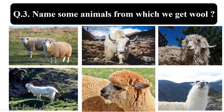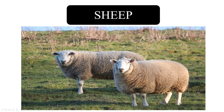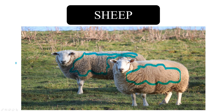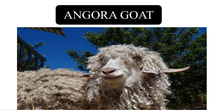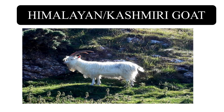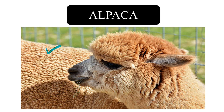Some animals from which we get wool are sheep, yak, angora goat, Himalayan or Kashmiri goat, alpaca, and llama. Sheep wool is the most commonly available wool in the market. Can you see the thick coat of hair on the sheep's body? From this thick coat of hair, we get our wool fiber. The yak also has a very thick coat of hair, as do the angora goat and the Himalayan or Kashmiri goat. Alpaca and llama also yield wool.